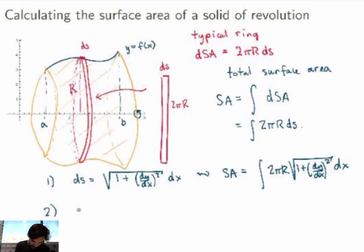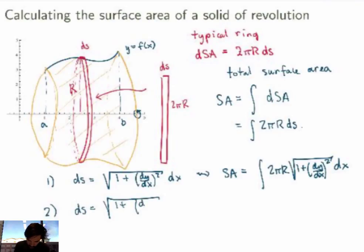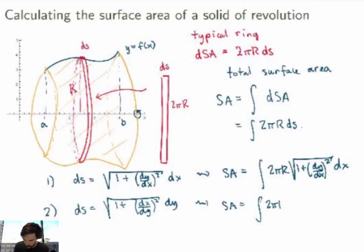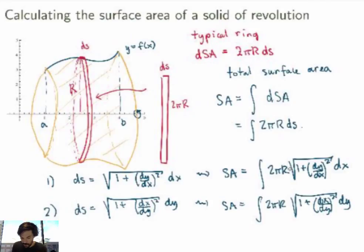You could also do everything in terms of the y variable — it could happen that your function is given as x as a function of y. In that case you would use the other expression for the line element, and the surface area becomes the same formula but with expressions as functions of y. The important difference is that in the x-case the radius r should be written as a function of x, and in the y-case as a function of y, with integration limits in x or y accordingly.